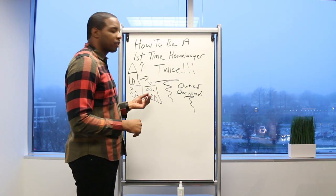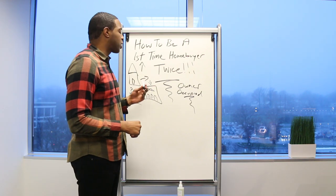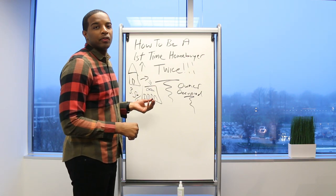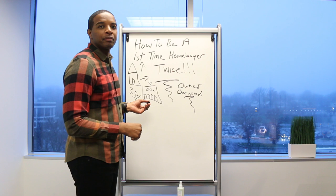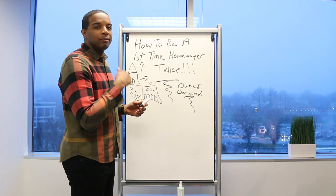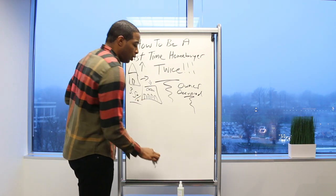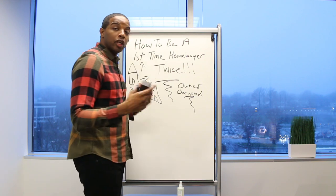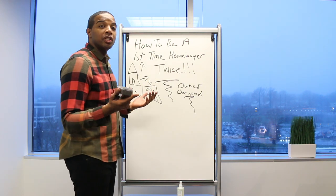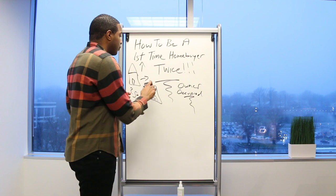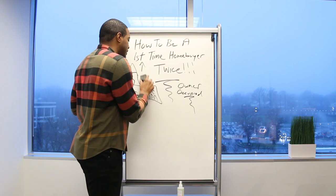The bank's like, nah we don't believe that you're leaving this single family and moving into this four family owner-occupied. We think you're trying to do business and just try to pull off an investment with lower down payment. Doesn't make sense to the underwriter, no go.